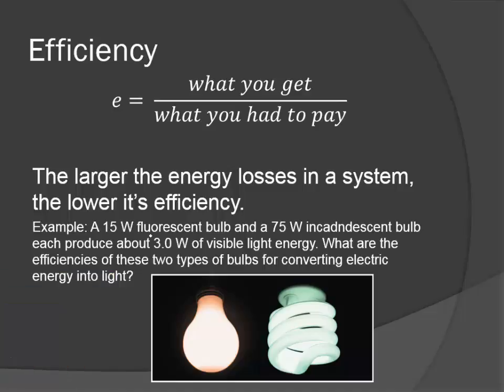Let me go back so we can do this example together. So here we have two different light bulbs. One is 15 watts and one is 75, but they each produce about 3 watts of visible light energy. So what is the efficiency of these light bulbs? The first one, the fluorescent light bulb, what you are getting out of it is 3 watts. What you had to put into it or what it is rated as is 15. So that's an efficiency of about 0.2 or 20%. The other one is 3 watts over 75, and that's a much lower efficiency. That equates to about 4% of efficiency. So both bulbs produce the same visible light output, but the fluorescent bulb does so with a lower energy input. So it's more efficient.